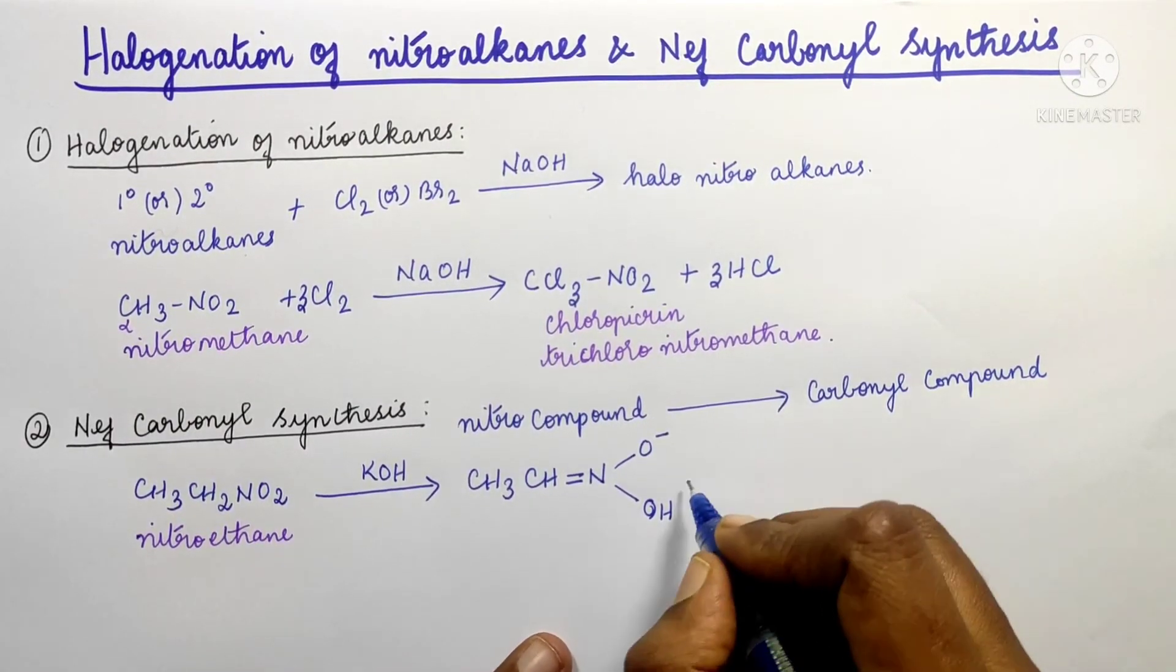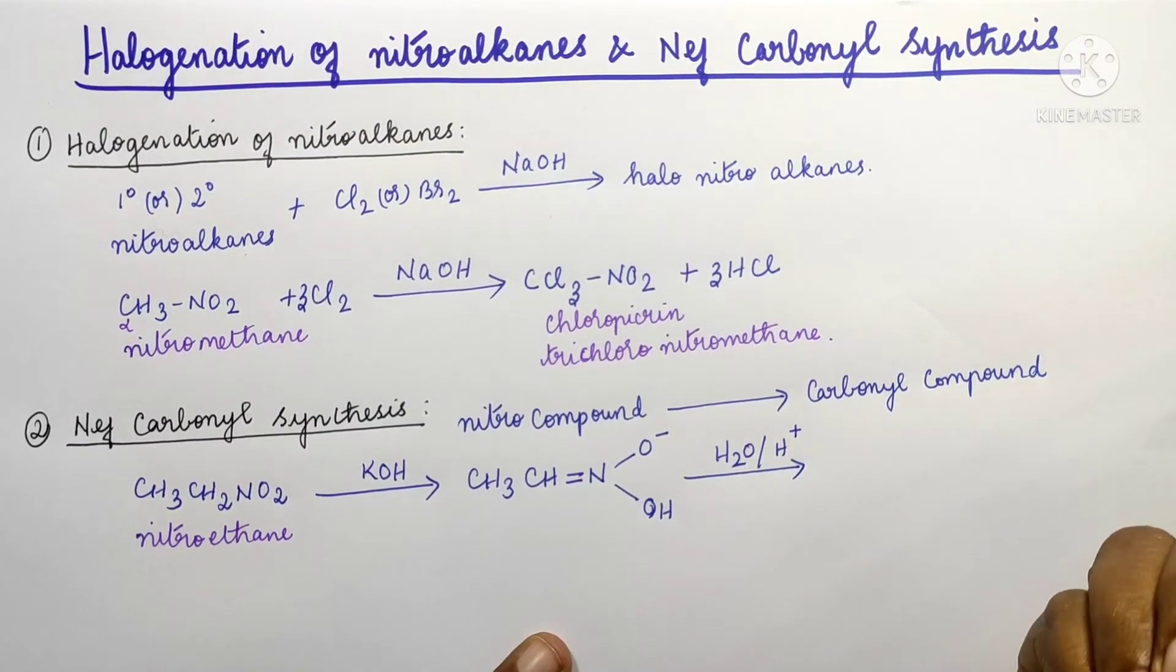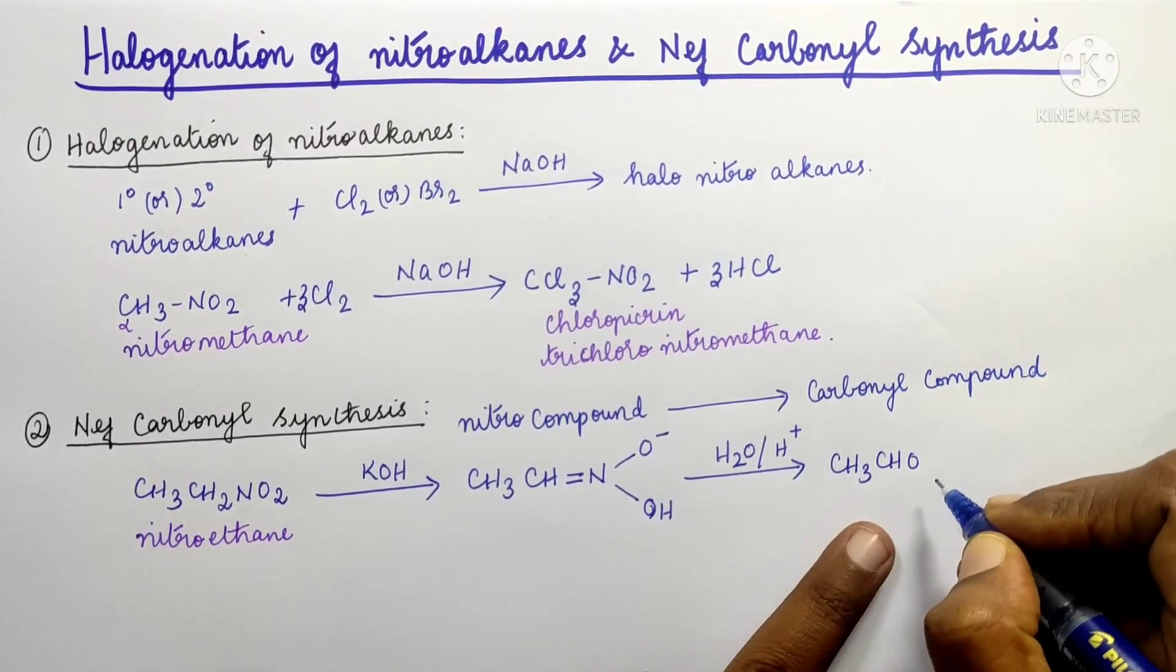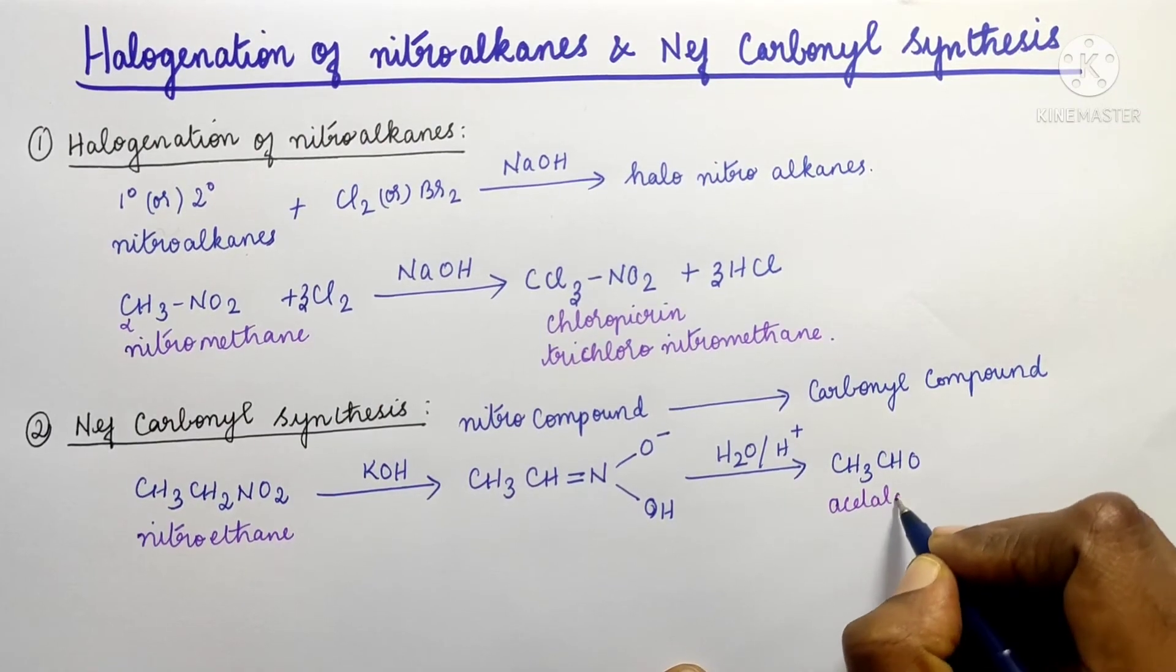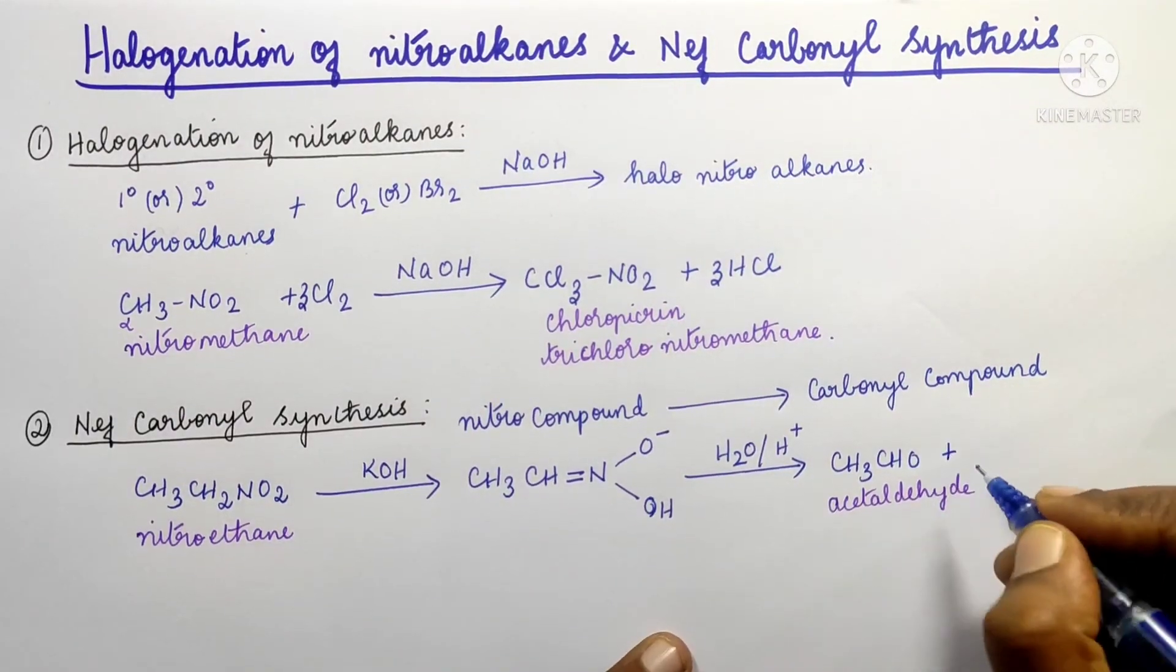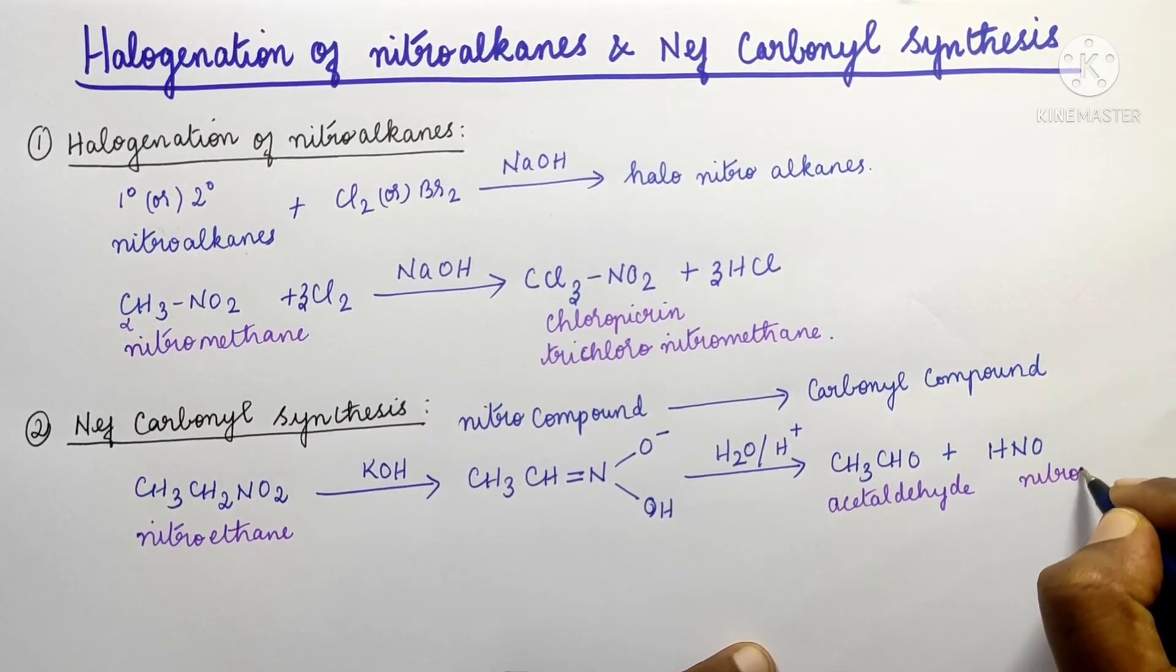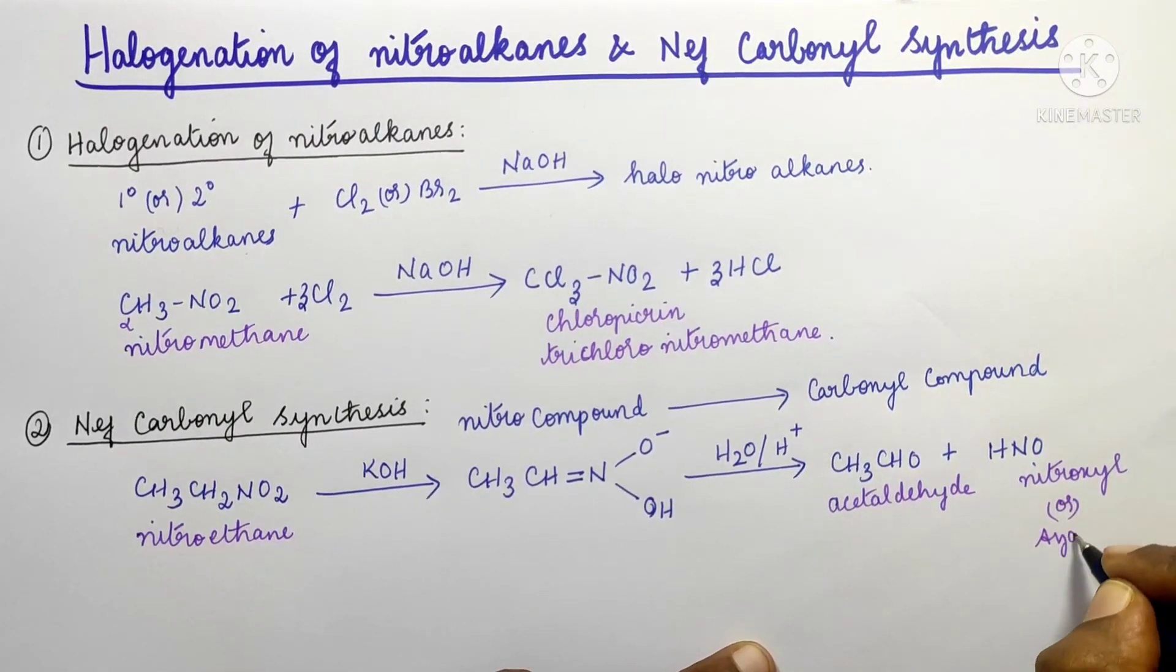Upon hydrolysis, this converts to CH3CHO. One carbonyl forms - this is acetaldehyde - plus HNO. HNO is called nitroxyl or hyponitrous acid.